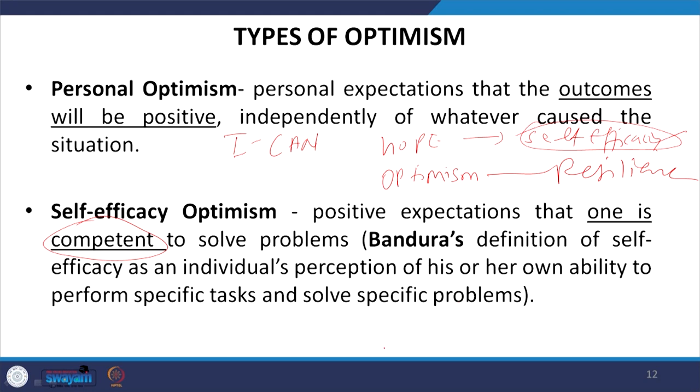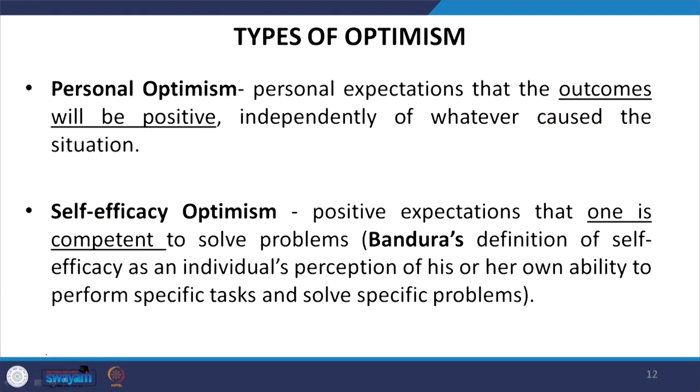Self-efficacy optimism is one's belief in their own ability to perform and get results. It is very important that when we have personal optimism or self-efficacy optimism, in both cases — in the first case, it is just an expectation that the outcome will be positive, but in the second case, it is a positive expectation that 'I am competent, that is why everything will be positive.'